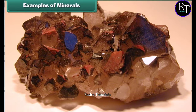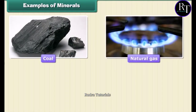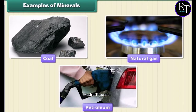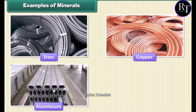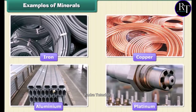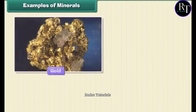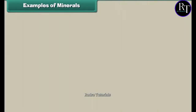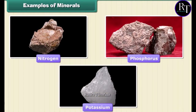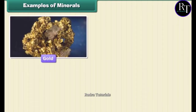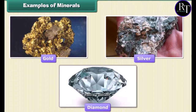Examples of minerals: Minerals are very important to humankind. Some minerals are used as fuels, for example, coal, natural gas, and petroleum. Some are used in industries, like iron, copper, aluminium, platinum, etc. Minerals like gold and lithium are used in medicines. Nitrogen, phosphorus, and potassium are used in fertilizers. Gold, silver, and diamond are used in jewelry.